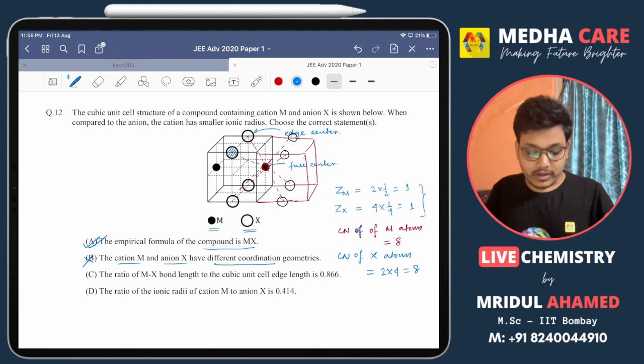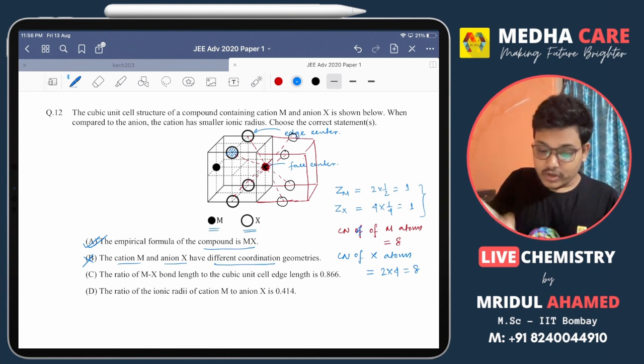Now going for option number C: the ratio of MX bond length to the cubic unit cell edge length is 0.866. It is very simple.